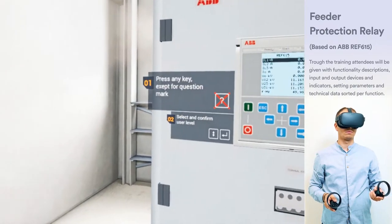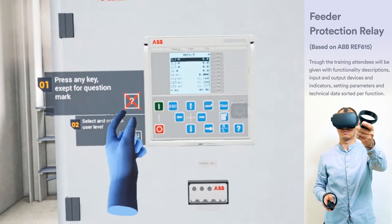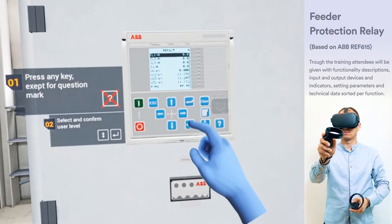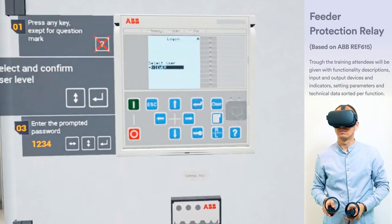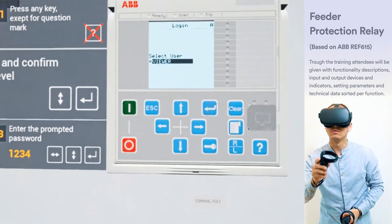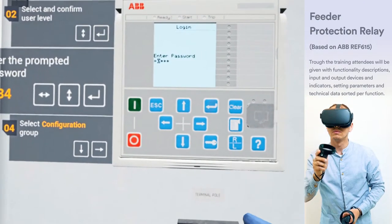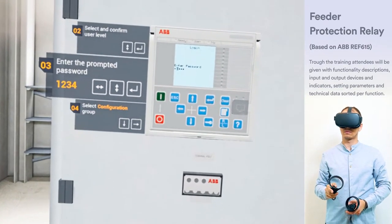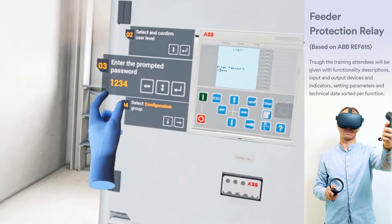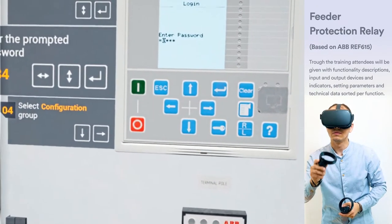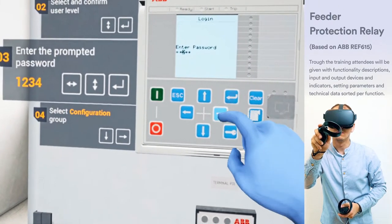Press any key except the question mark to activate the login procedure. Press up or down to select the operator user level, then confirm the selection by pressing enter. Enter the prompted password digit-by-digit — in this case it's 1234. Use the left and right buttons to activate the digit, and enter a character with the up and down buttons. Press enter to confirm the login.